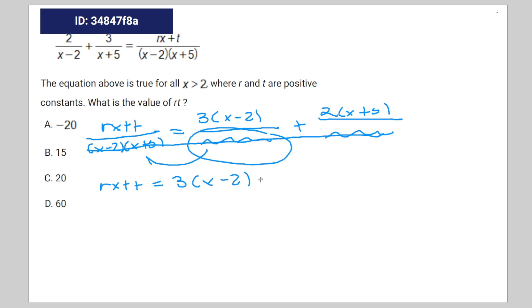3 times x minus 2 plus 2 times x plus 5. Solve the equation: it's going to be 3x minus 6 plus 2x plus 10, which is equal to 5x plus 4, is equal to rx plus t.